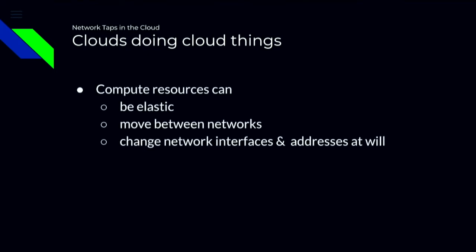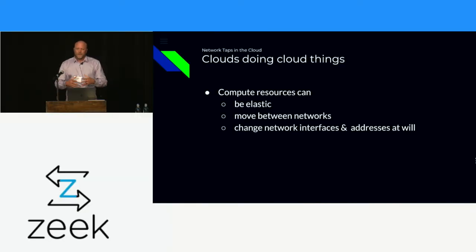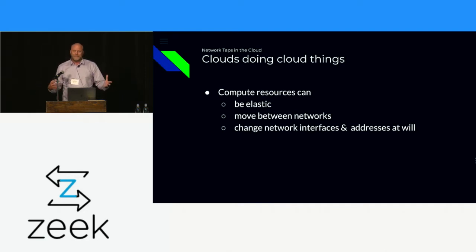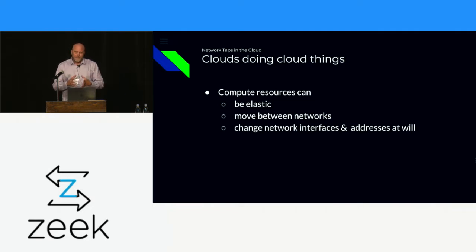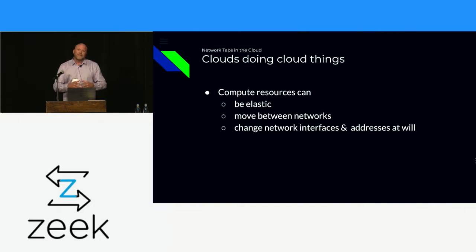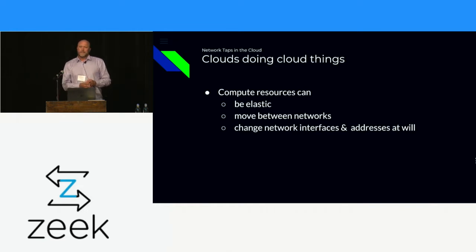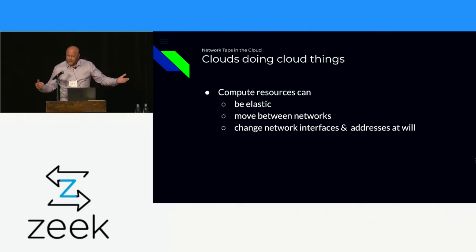Clouds really do cloud things. Outside of cost savings, people are moving their workloads to the cloud because of the capabilities. You get this elastic nature — compute environments can grow and shrink based upon load, or they can follow the sun. Being elastic is great. But what happens is the networks they are operating on are also elastic. The ephemeral nature of the address is really starting to creep in. We've had private IP addressing for a while, but think about it from a very elastic environment.